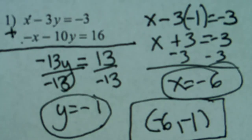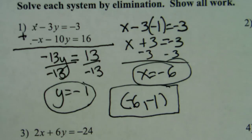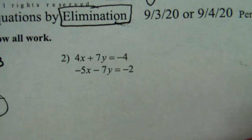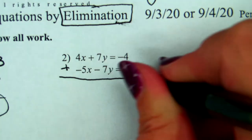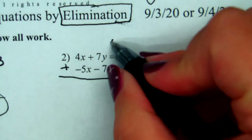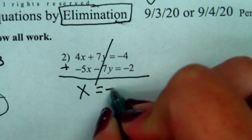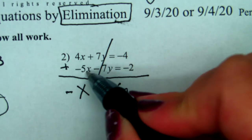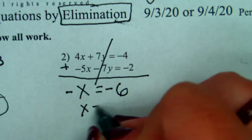That was an easy one because all we had to do was add the two equations and the x's got eliminated. On number 2, it's much the same. Which variable will be eliminated if we just add the two equations together? We add the y's. We get negative x equals negative 6 — because when you add 4x minus 5y together, you get negative x. So x equals 6.